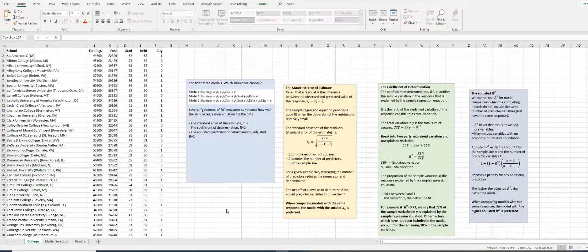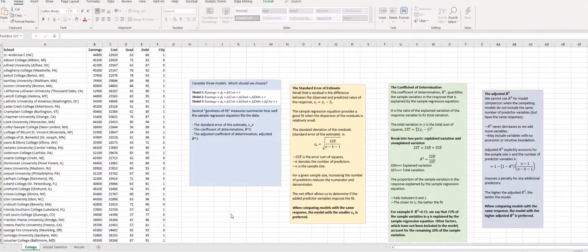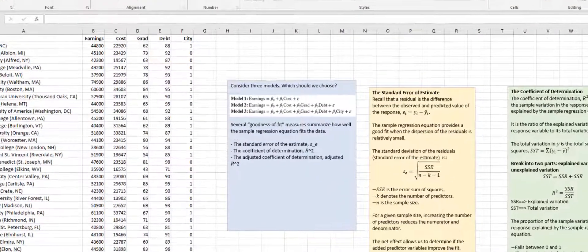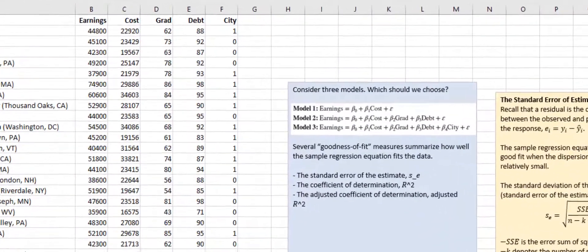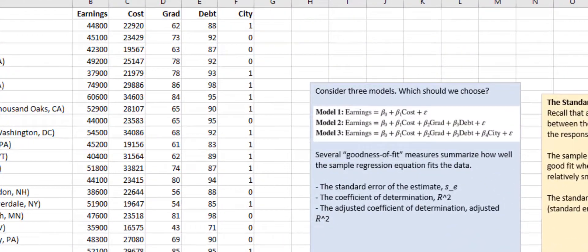To address these questions, Fiona gathers information from 116 colleges on annual post-college earnings. So you see that on the screen earnings in dollars, the average annual cost which is cost in dollars, the graduation rate or grad in percentage, the percentage of students paying down debt which is debt, and whether or not a college is located in a city. So city equals 1 if a city location, 0 otherwise.